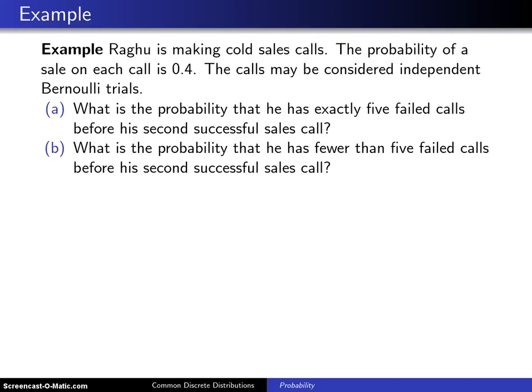Raghu is making cold sales calls. The probability of a sale on each call is 0.4. That's because Raghu is a particularly good salesman, and furthermore each of these calls can be considered an independent Bernoulli trial.